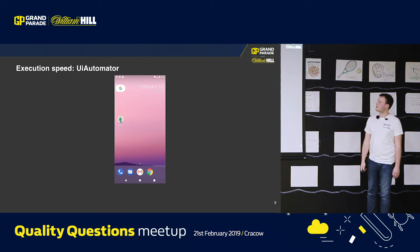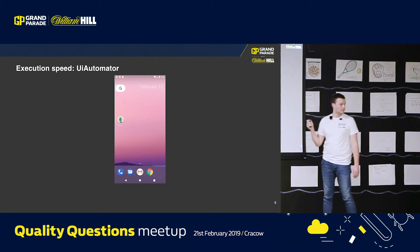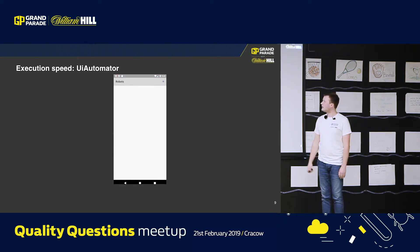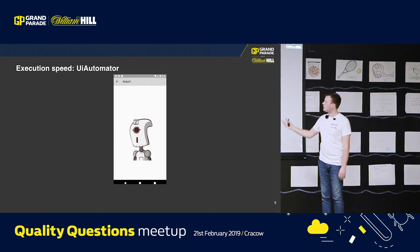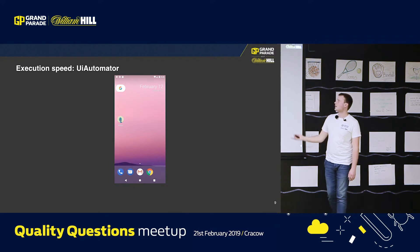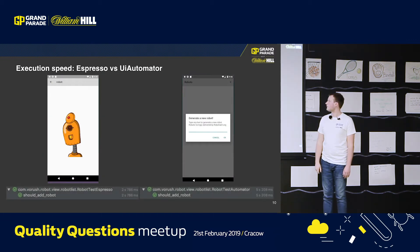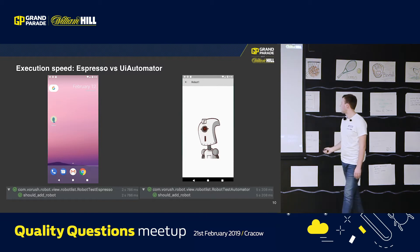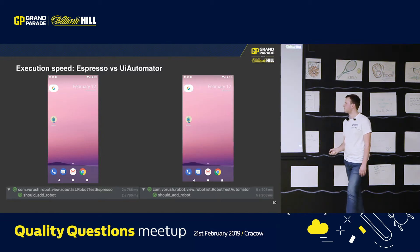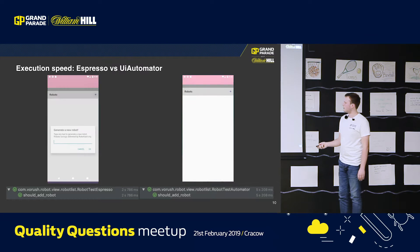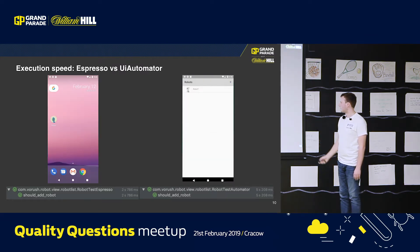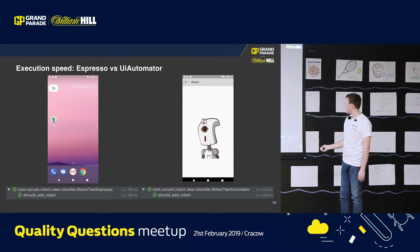Appium underneath uses UI Automator. Let's look at execution speed. This is a simple test which creates a new list item, opens it, and verifies that everything is correct. Seems quite fast, but let's compare it to Espresso. The same test, but with our progress bar we can see that Espresso was two times faster than UI Automator — 2.7 seconds versus 5.2 seconds.